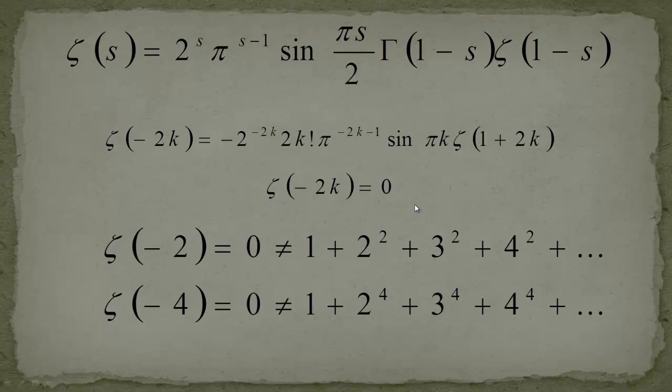So this is what you should take from this video: the trivial zeros are lying on the negative real axis for -2, -4 and so forth. And what you should take with you, maybe I will do a video on that because it's a little bit confusing for many people.